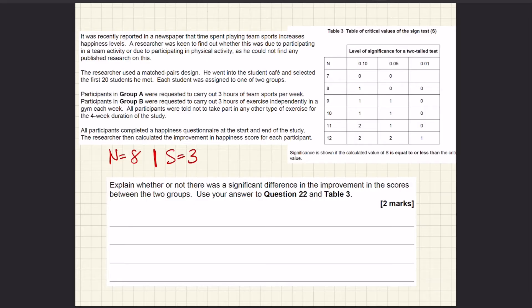All we have to do here is identify our critical value by finding the N value and the significance level in the critical values table. We know the significance level is going to be 0.05 because we haven't been told otherwise, and the significance level is always 0.05. We know that our N value is 8 and our S value is 3.